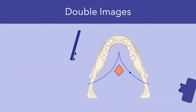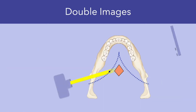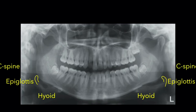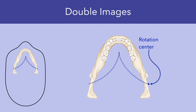There is a zone that lies posterior to the rotation center where objects are intercepted by the beam twice. Images of these structures are seen on both sides of the film. Anatomic structures that cast double images include the epiglottis, the hyoid bone, the airway, and the cervical spine. Also note that due to the projection geometry, double images appear as mirror images. This graphic demonstrates the anatomic zone that casts double images.